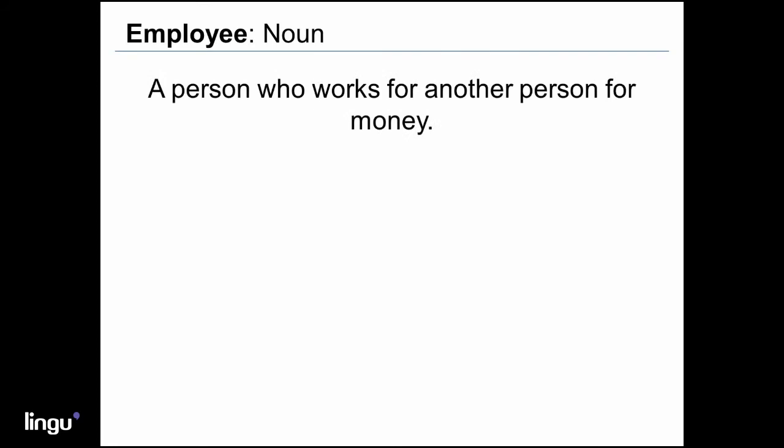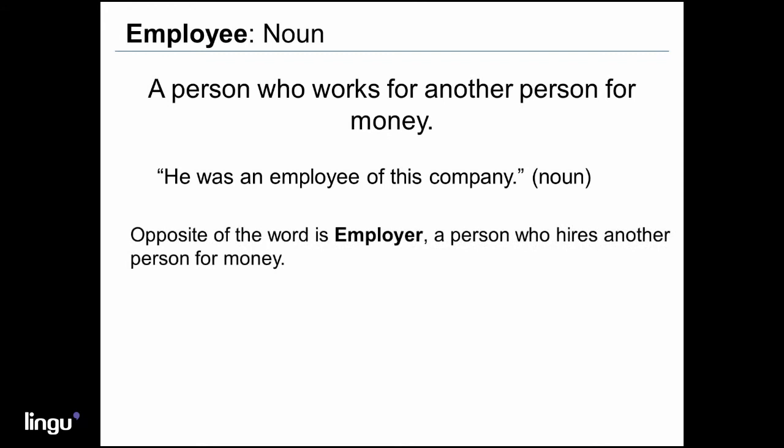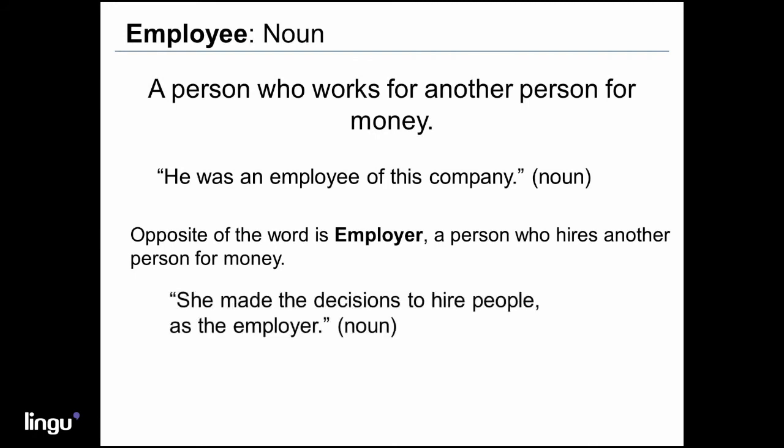'Employee' is a noun which means a person who works for another person for money. For example: 'He was an employee of this company.' The opposite of this word is 'employer,' which is a person who hires another person for money. For example: 'She made the decisions to hire people as the employer.' Other words that can be used for employee include agent, member, or staff member.